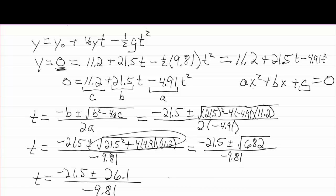Now it's just a matter of evaluating this thing. I'll get two answers. One will be minus 21.5 minus 26.1 all over minus 9.81. When you evaluate this be careful to do the entire numerator. Maybe wrap it in parenthesis before you divide it by the bottom so you get the order of operations correct.